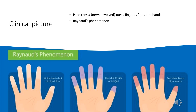When peripheral nerves are involved by the inflammatory process, paresthesia of the toes and hands is often described. Raynaud's phenomenon is present in 40% of patients, which involves episodic color changes of fingers or toes: the color of the fingers turns white due to lack of blood flow, then blue due to lack of oxygen, and finally red when blood flow returns to normal.